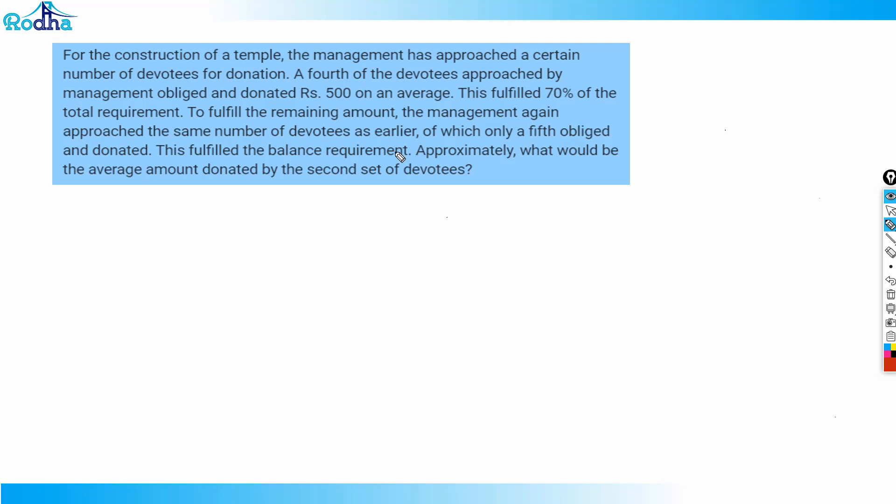Look at this question here. For the construction of a temple, the management approached a certain number of devotees for donation. A fourth of the devotees approached obliged and donated 500 on average. This fulfills 70% of the total requirement. To fulfill the remaining amount, the management again approached the same number of devotees, of which only a fifth obliged and donated, fulfilling the balance requirement. What would be the average amount donated by the second set of devotees?